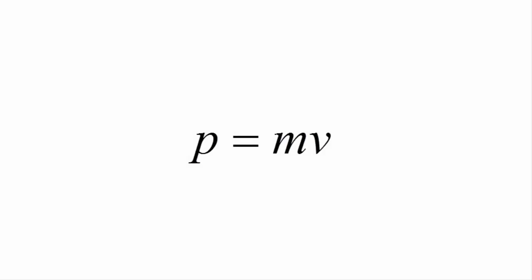So momentum is a product of mass and its velocity. Mass is a scalar quantity, but velocity is a vector quantity. The product of a scalar with a vector is also a vector. So momentum is a vector.